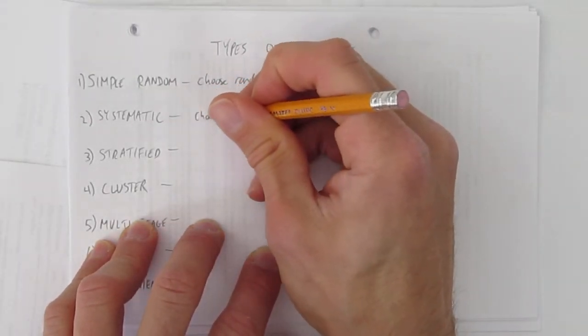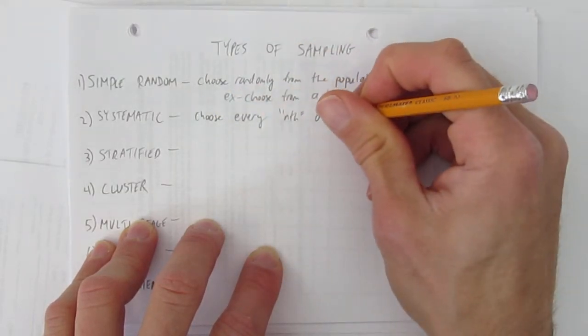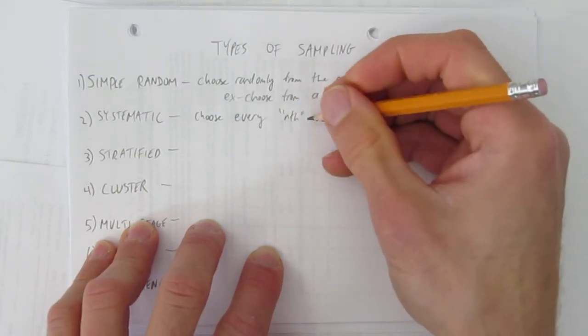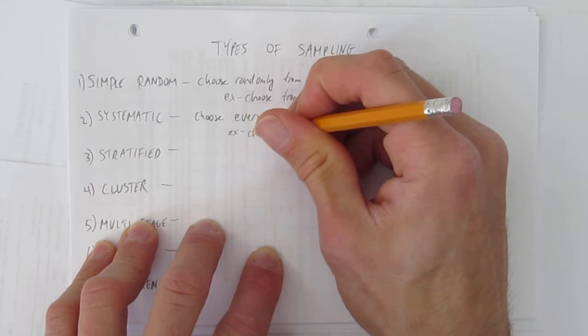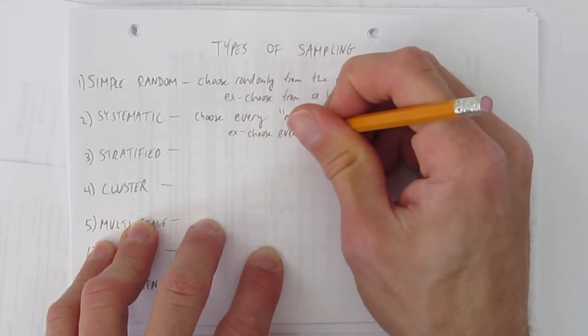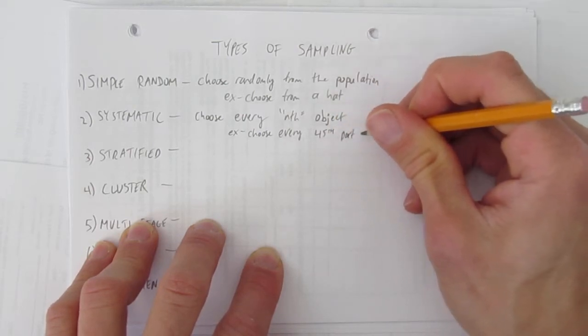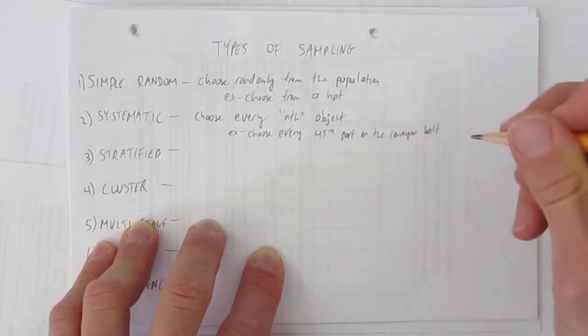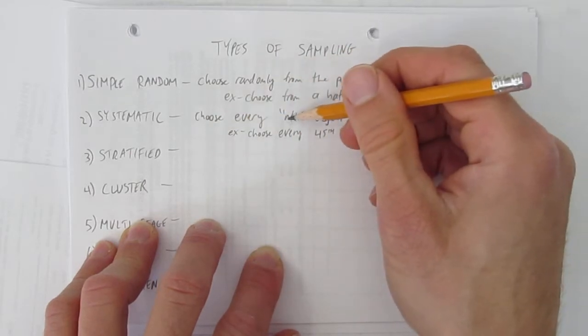Systematic sample is choose every nth object or person. So what do I mean by every nth? I mean every second or every third or every fifth or every hundredth or every 700 and second thing. So for example, choose every 45th part on the conveyor belt. This is something companies will use and they'll take every specific nth thing. It might be 45th. It might be 90th. It might be 101st. It's up to them. A systematic sample, you choose every nth object.